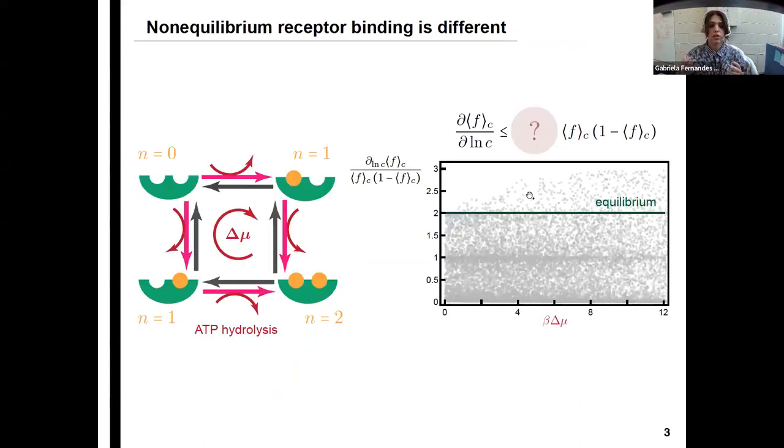So now we can ask ourselves what happens out of equilibrium. In order to have non-equilibrium driving in our receptor binding model, we couple it to ATP hydrolysis. So now we have a chemical potential difference that is driving the system out of equilibrium. So now if we randomly sample rates for the system and we plot the sensitivity divided by this F times one minus F, and we look at this ratio as a function of the non-equilibrium driving, we do see that it's not bounded by two anymore, which is what you would expect in equilibrium. And there seems to be a bound over here that even depends on the non-equilibrium driving. So a question that we're interested in, we will be able to answer at the end of the talk is, what is this term over here that's bounding this sensitivity when we are out of equilibrium?